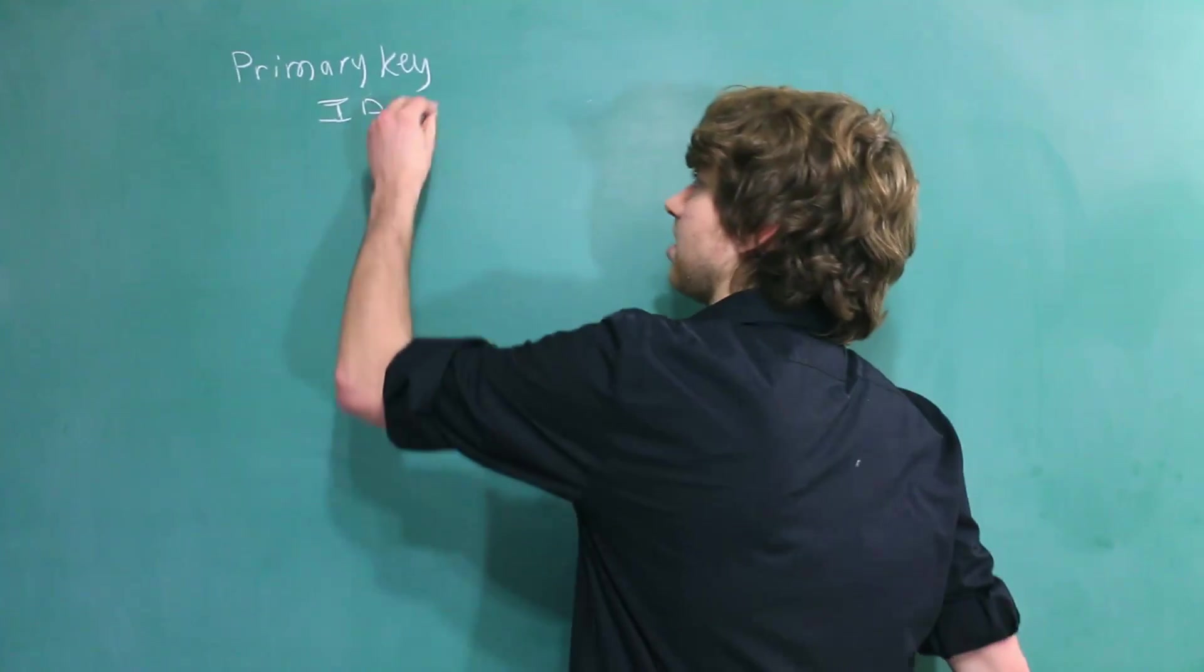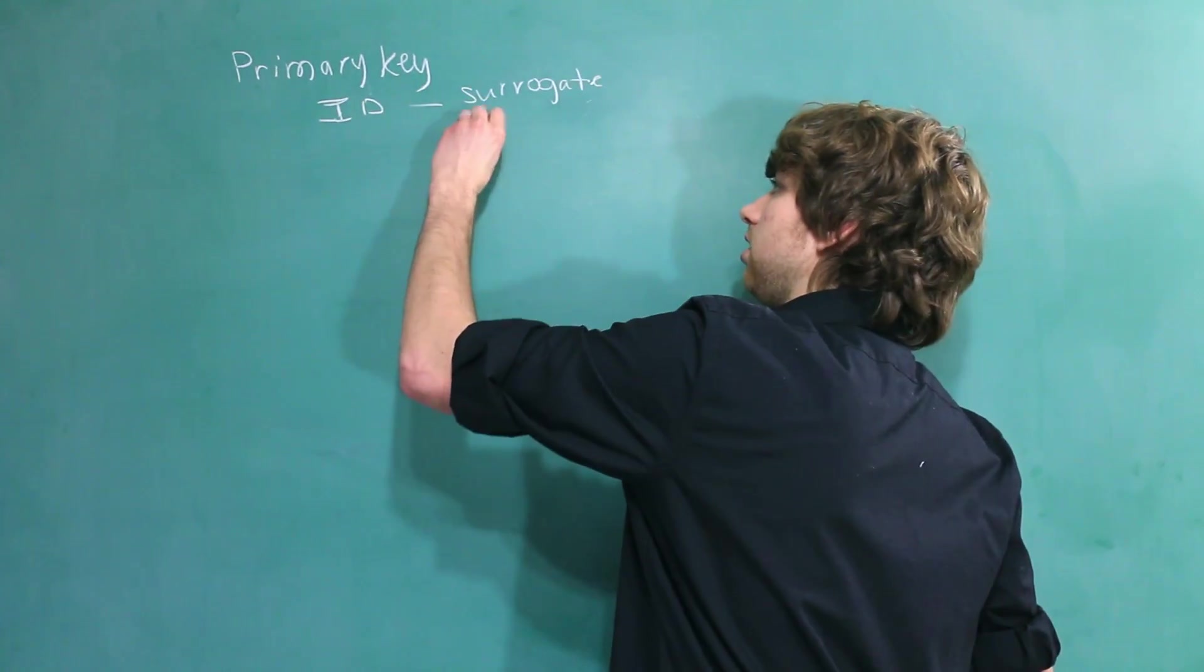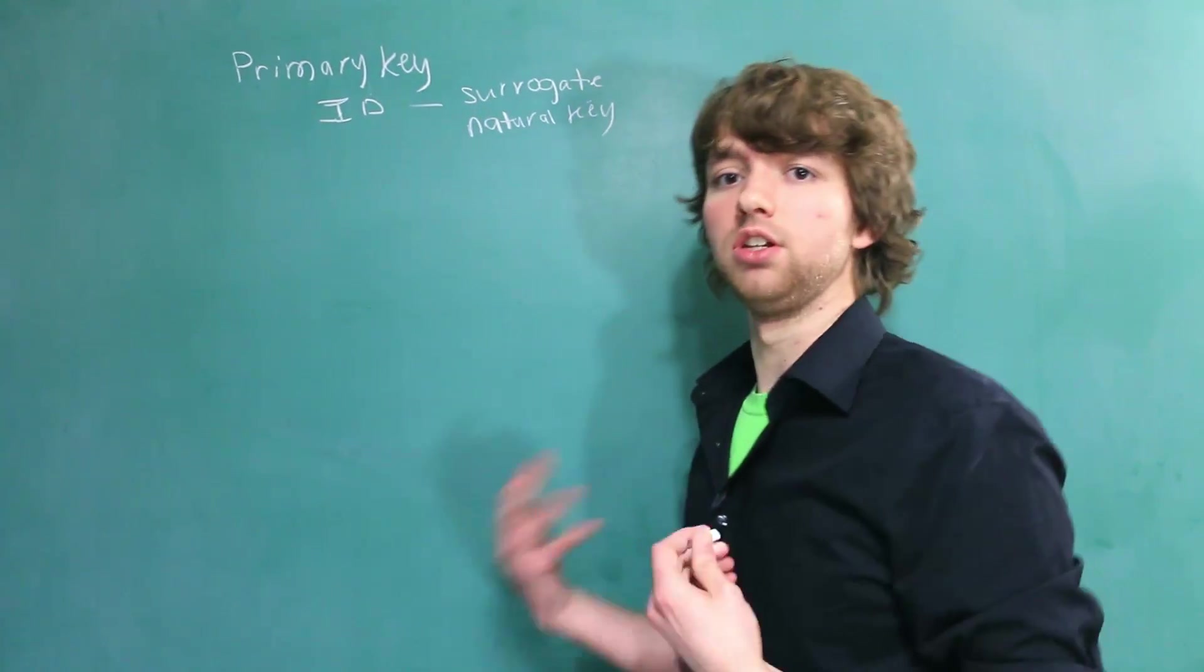The ID is known as a surrogate key. That is different than a natural key. A natural key is actually used for something.